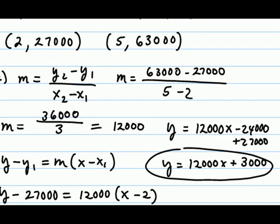We should check this to make sure that both ordered pairs really do exist on this line. We can do so by verifying that if x is 2, y should be 27,000. And also, we would need to verify that if x is 5, y turns out to be 63,000.